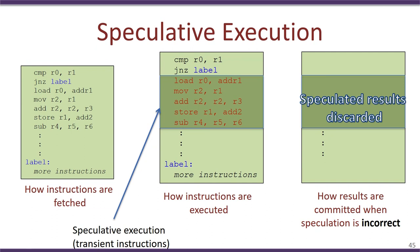On the other hand, if the speculation was wrong — that is, a branch occurred to a different address and different instructions need to be executed — then all the speculatively executed results need to be discarded, which incurs a performance overhead. Processors therefore try their best to speculatively execute correctly.